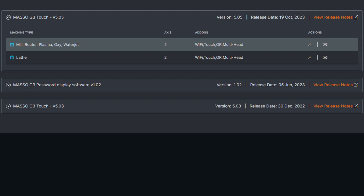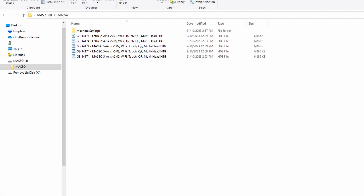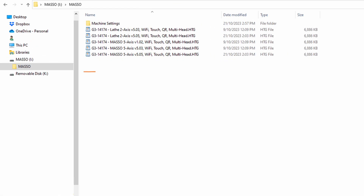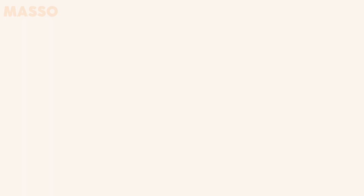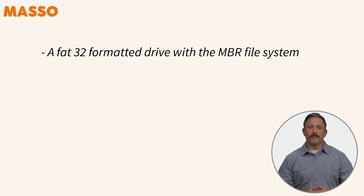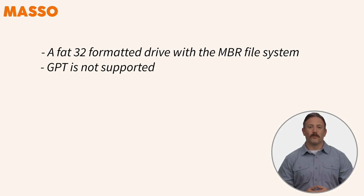Place the downloaded file into a folder called Masso on a branded flash drive. Be sure to use a FAT32 formatted drive with the MBR file system, as GPT is not supported on Masso.